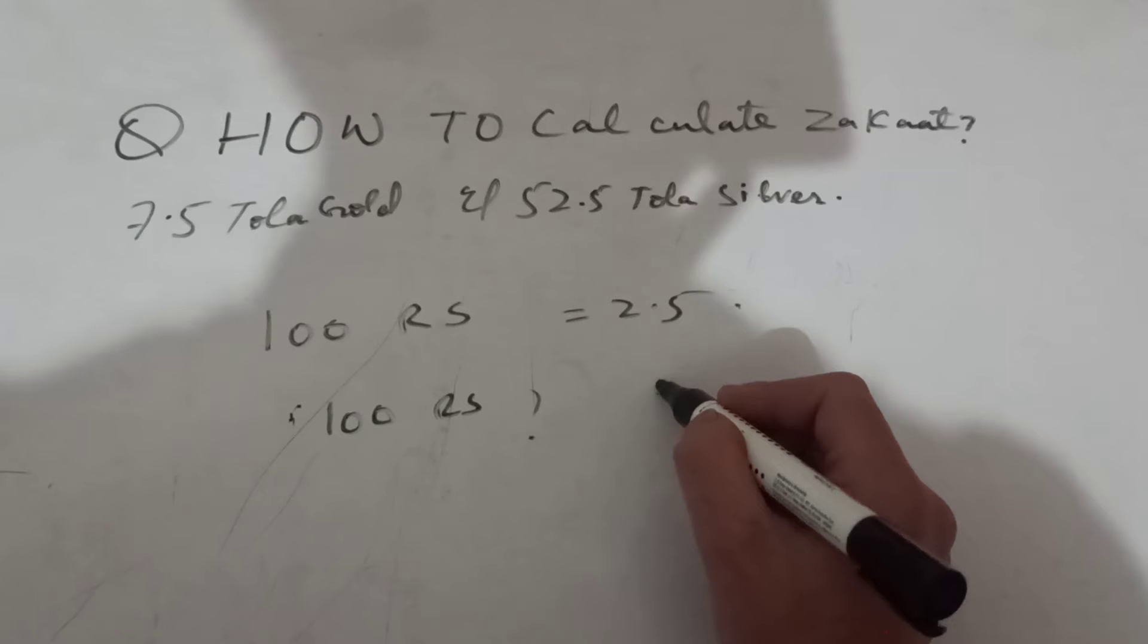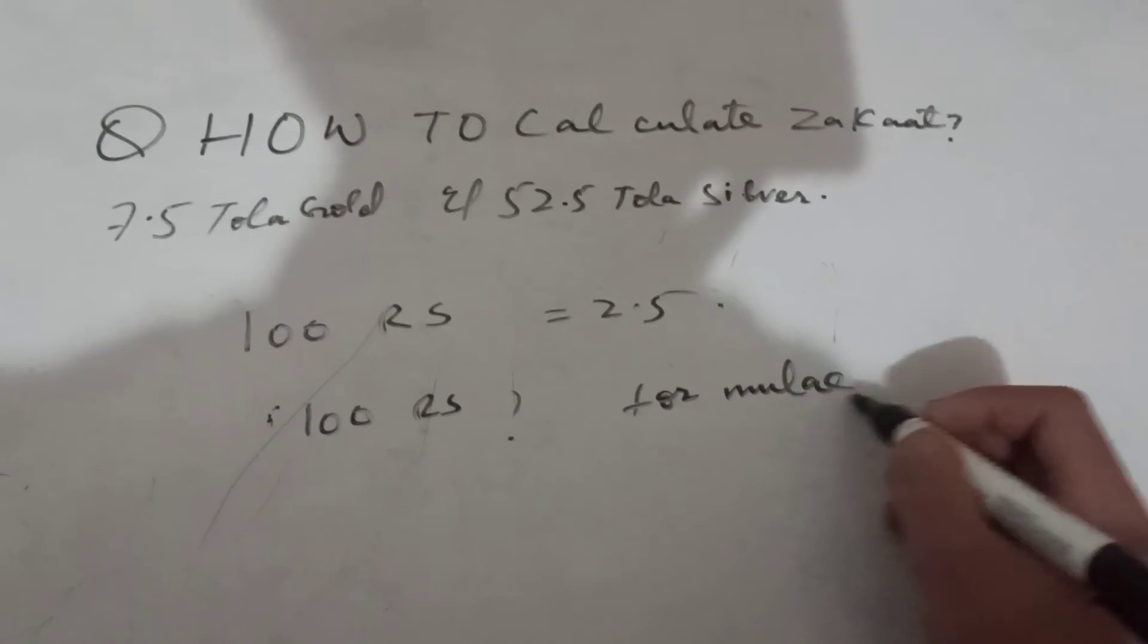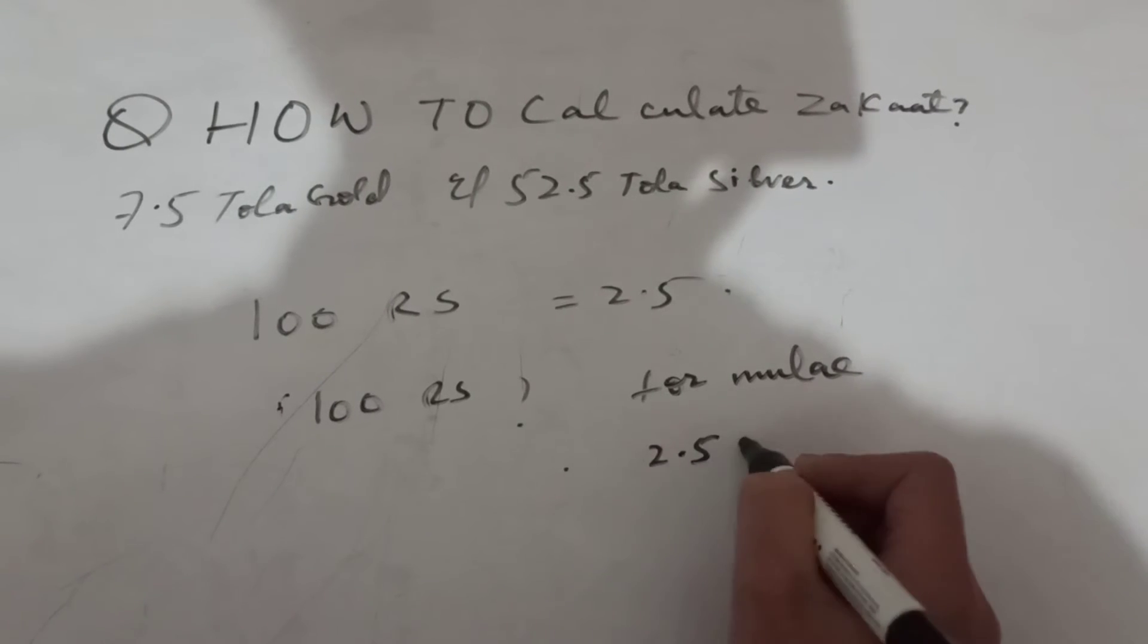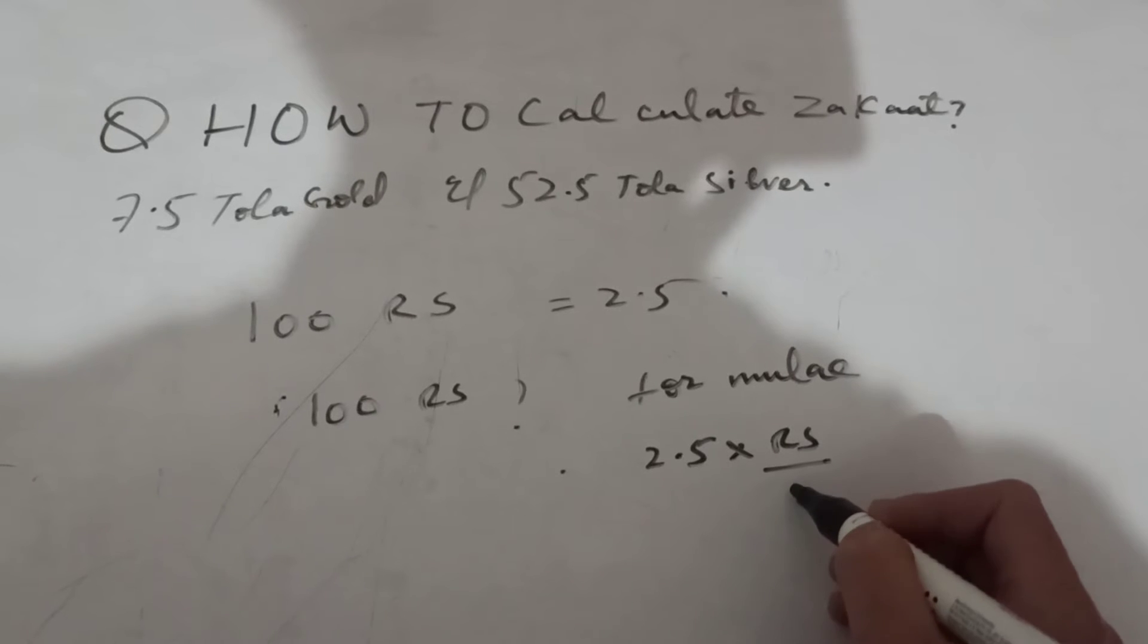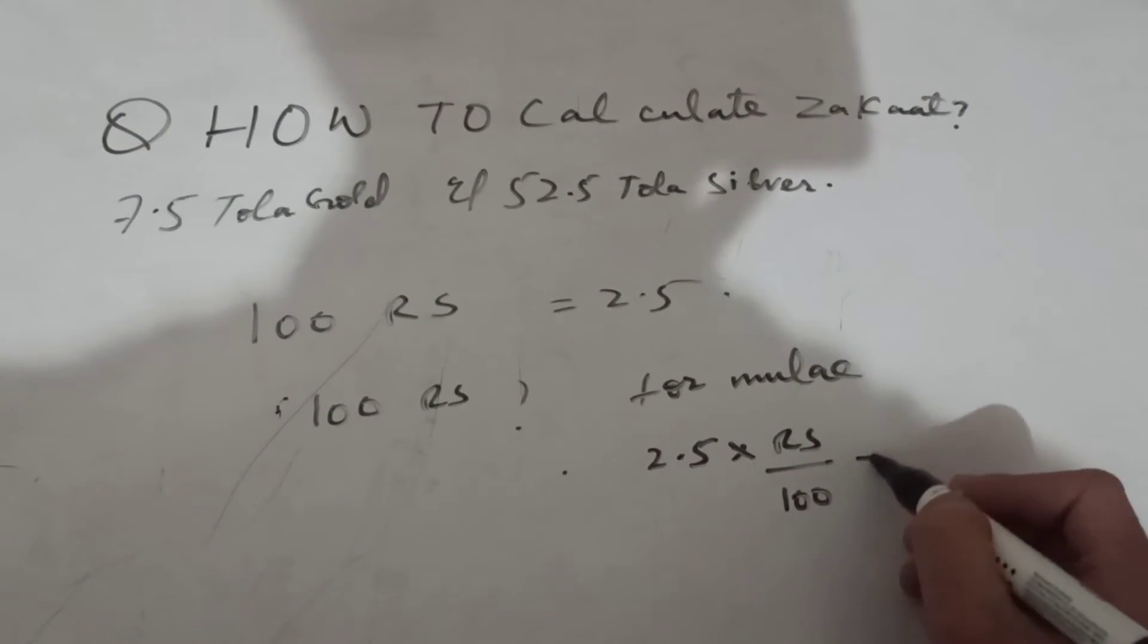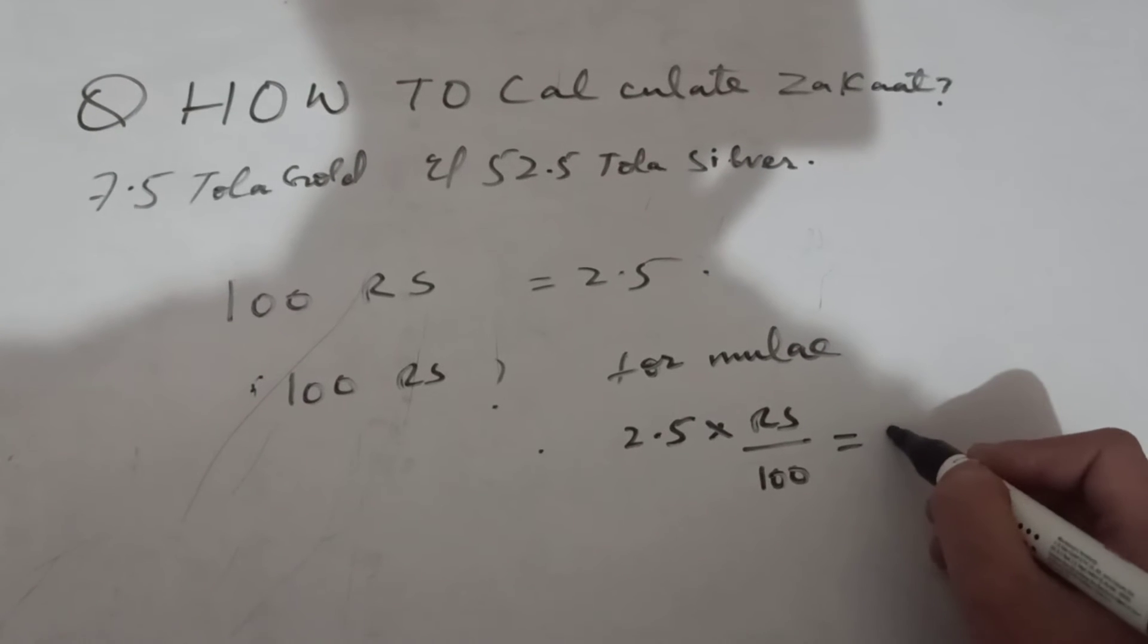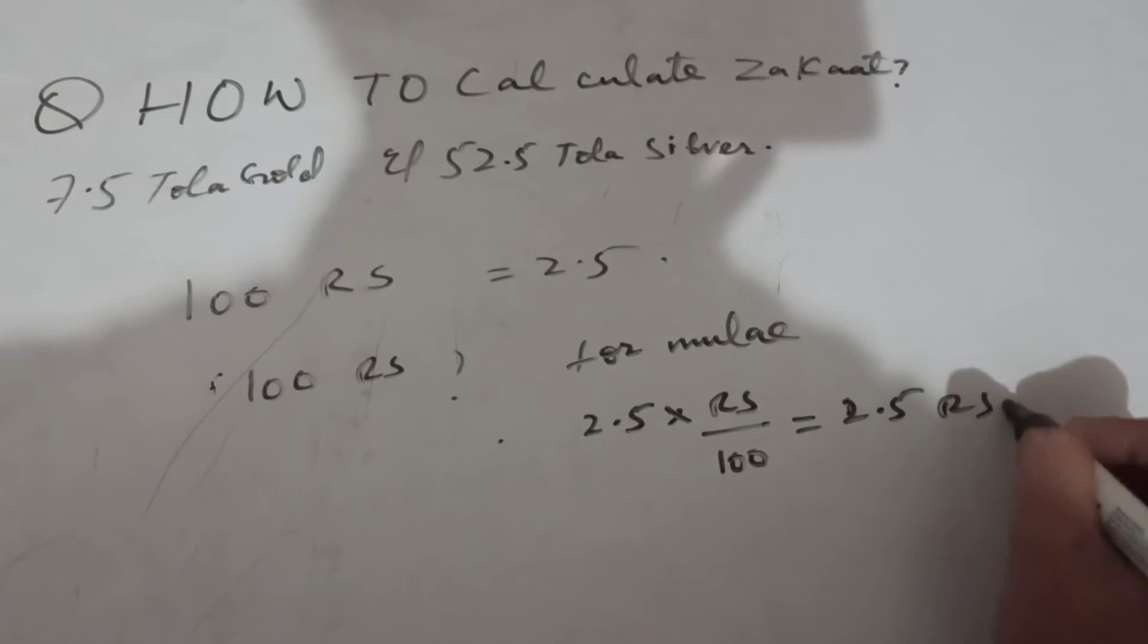Now, you will use the formula. 2.5 multiplied by rupees. Number of rupees you have divided by 100. And you have 100 rupees above. So, you will calculate it. It will come out 2.5 rupees.